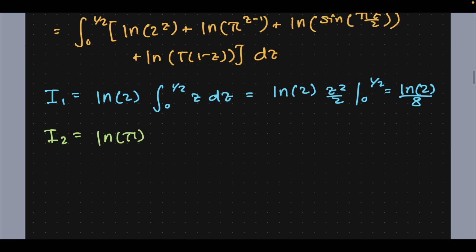So I2 is going to be similarly natural log of π times the integral from 0 to 1/2 of (z-1) dz. So that's natural log of π times (z²/2 - z) from 0 to 1/2.